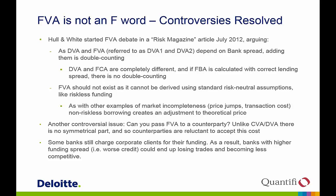Another controversial issue: can you pass FVA costs to the counterparty? CVA and DVA net together to form bilateral CVA, which can be taken to market. But for FVA there is no symmetrical counterpart — both parties actually have to borrow money, so both bear costs. Counterparties are therefore reluctant to accept this cost. Some banks will still charge corporate clients for their funding; some banks will absorb it. For those who charge, banks with higher funding spread and worse credit could end up losing trades, losing clients, and becoming less competitive.